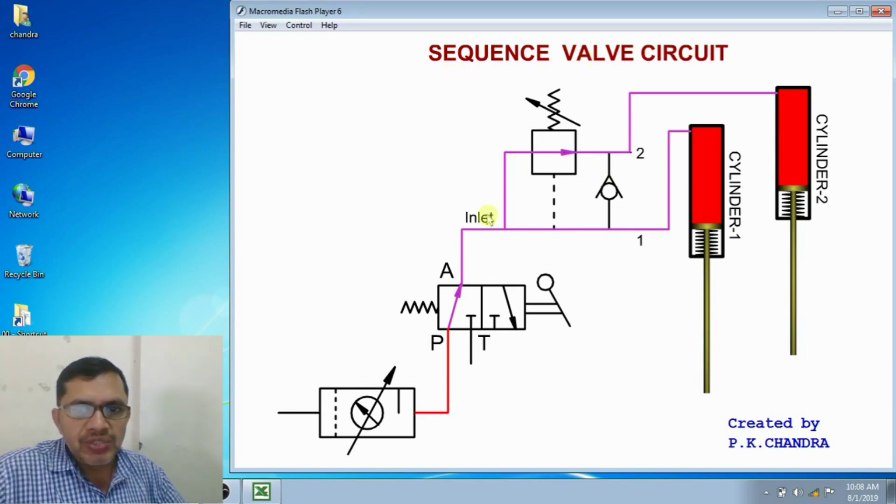This is the sequence valve. It has one inlet and two outlets. Outlet 1 and outlet 2. Outlet 1 is connected to first cylinder. Outlet 2 is connected to the second cylinder. And the circuit has two cylinders. These are single acting cylinders.